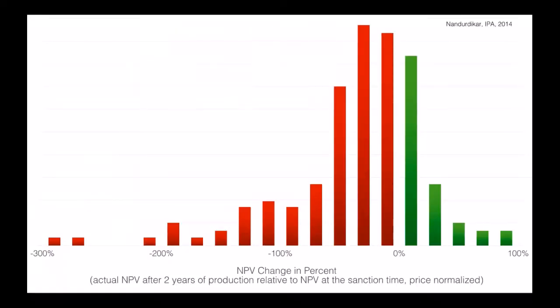I want to start this off by showing you a histogram that was developed in a paper by Nanderdekar at IPA, a few years back. IPA is a benchmarking company. They have more than 20,000 projects in their database from more than 50 operators. The data we're looking at here covers about a 15-year span, starting around the year 2000.